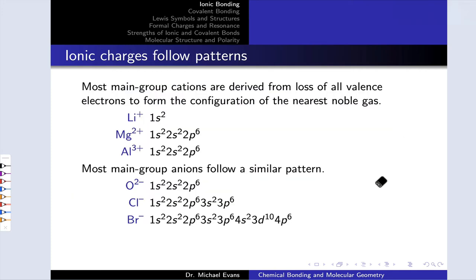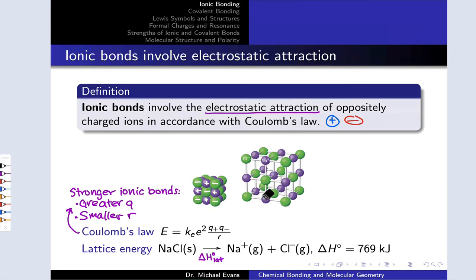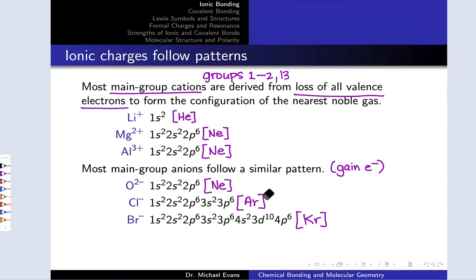Now is a good time to note that the ionic charges in monatomic cations and anions follow patterns that we can infer from the periodic table and electron configurations. Main group cations, which are cations derived from atoms in groups one, two, and thirteen, tend to be derived from loss of all the valence electrons to form the configuration, the electron configuration, of the nearest noble gas. So for example, lithium plus has the configuration of helium, magnesium two plus is neon, aluminum three plus is also neon, and on the anion side, these relatively electronegative non-metal atoms tend to gain electrons to reach the closest noble gas to form anions. So O two minus, for example, has the configuration of neon, Cl minus has the configuration of argon, and Br minus has the configuration of krypton. Keep these ideas in mind. It's a way to infer ionic charges in ionic compounds, which is needed, for example, for assessing lattice energy, relative strengths of ionic bonds, and thinking about the reactivity of ionic compounds.